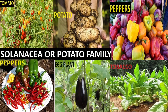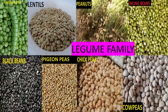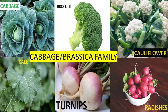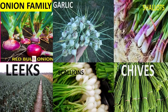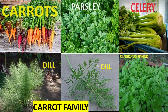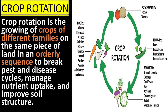Crop families include: the potato family, also called the Solanaceae family; the grasses family, also called the Gramineae or Poaceae family; the legume family, also called Leguminosae or Fabaceae family; the cabbage or Cruciferae or Brassicaceae family; the cucurbit or Cucurbitaceae family; the onion or Amaryllidaceae family; and the Apiaceae or Umbelliferae family. Crop rotation is the growing of crops of different families on the same piece of land in an orderly sequence to break pest and disease cycles, manage nutrient uptake, and improve soil structure.